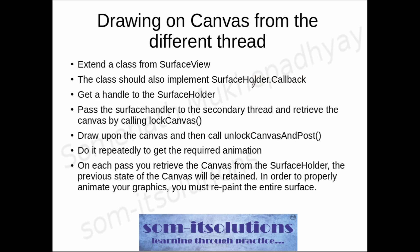These are the basic steps to draw onto the canvas from a secondary thread. The first step, as you already know, is that we need to extend our view class from a special view class — from SurfaceView. To do drawing on the canvas from a secondary thread, we need to use SurfaceView.